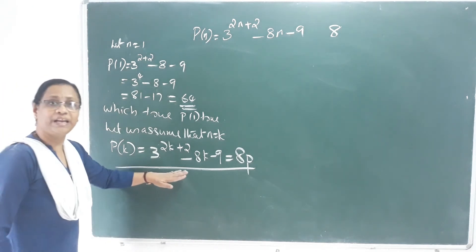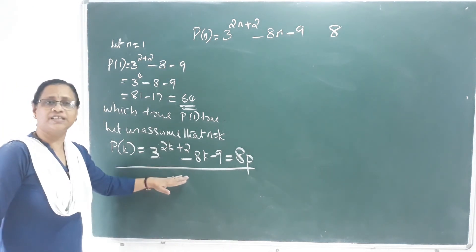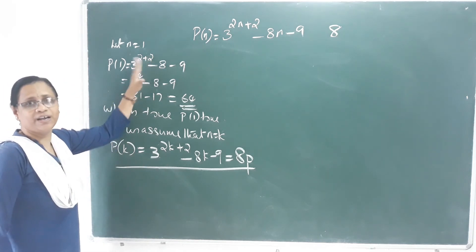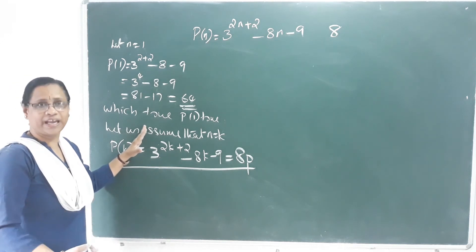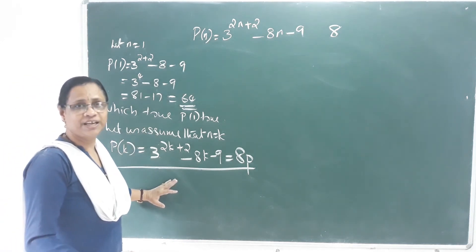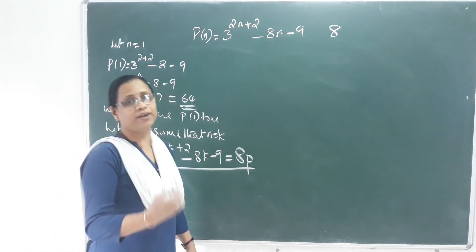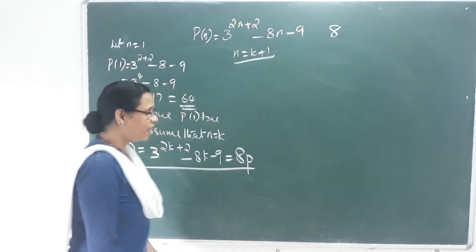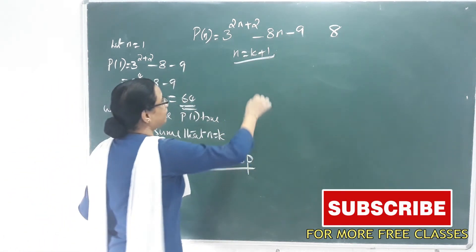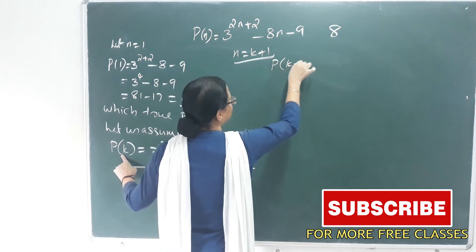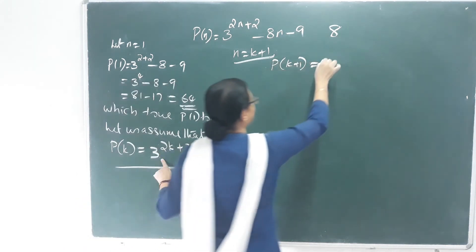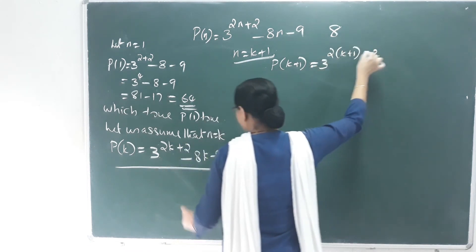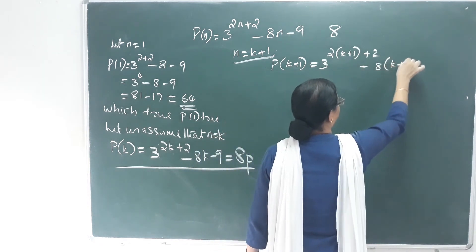Third step: we shall prove that P of N is true for n equal to k plus 1. P of k plus 1 equals 3 raised to 2 into k plus 1 plus 2, minus 8 into k plus 1, minus 9.